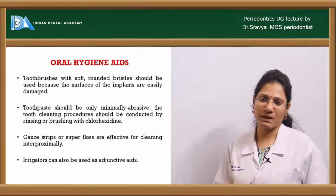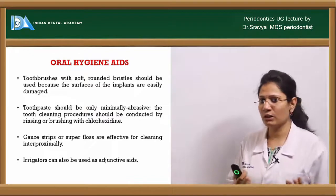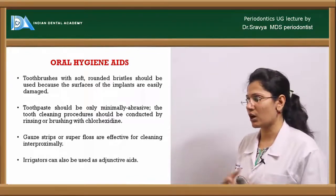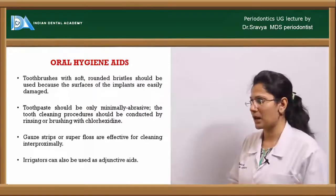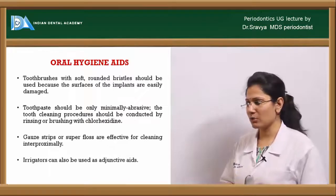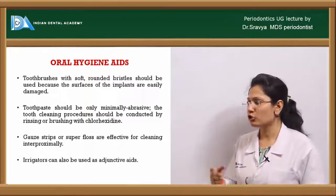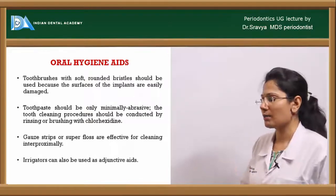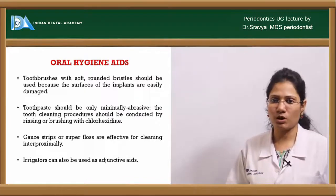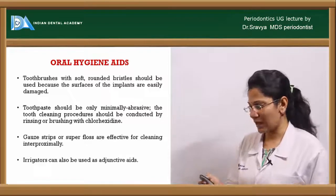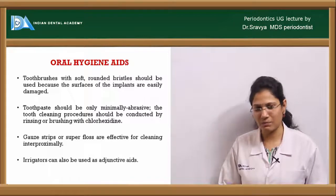Oral hygiene aids specially available for implant maintenance include toothbrushes with soft rounded bristles, which can be used under the implant surface without causing damage. Toothpaste should be minimally abrasive, and cleaning should be conducted by rinsing or brushing with chlorhexidine. Gauze strips or super floss are effective for cleaning interproximal areas, and irrigators can also be used as adjunctive aids. This concludes the session on dental implants.